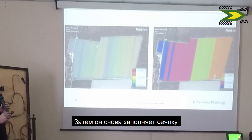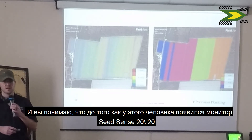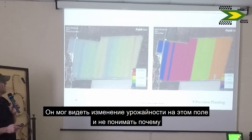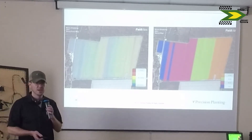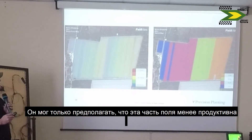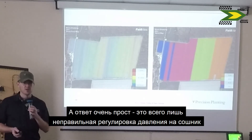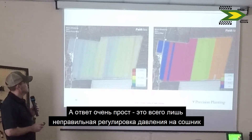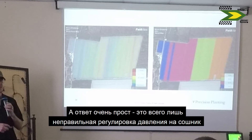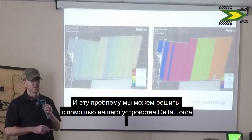Before this person had a 2020 and this information available while planting, they might see yield variation through the field and not know why. They had no idea that downforce management was causing the problem. They may have thought every year at harvest that certain areas of the field were lower-producing — maybe blaming soil type or a water problem. But in reality, now that they have the information to manage the planter better, they can see it was a downforce management problem they can solve with tools like Delta Force.